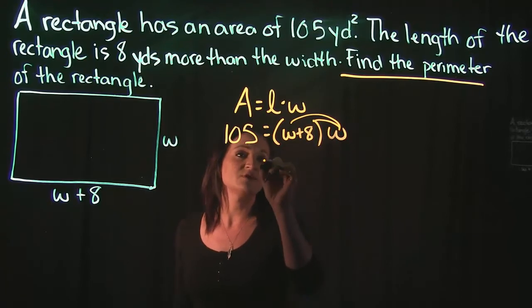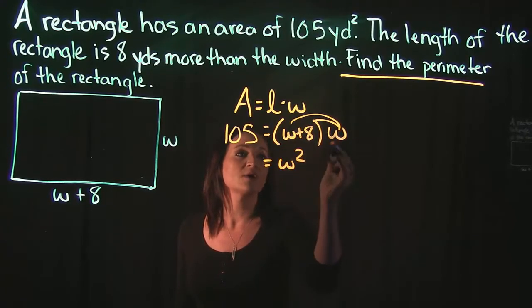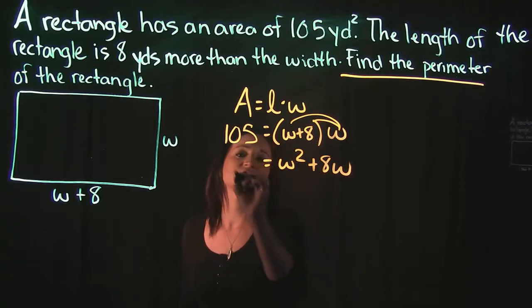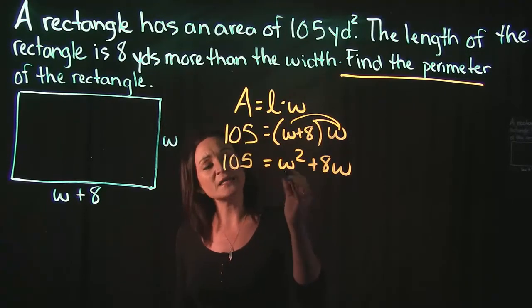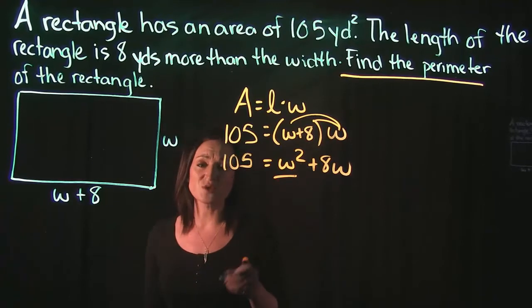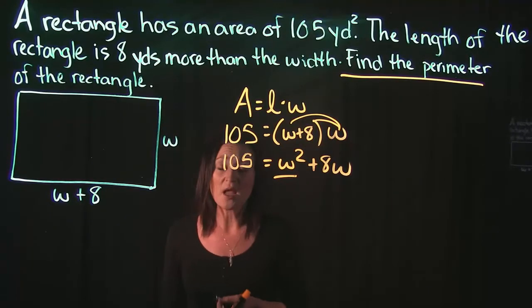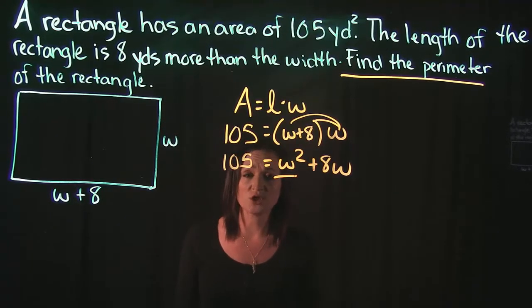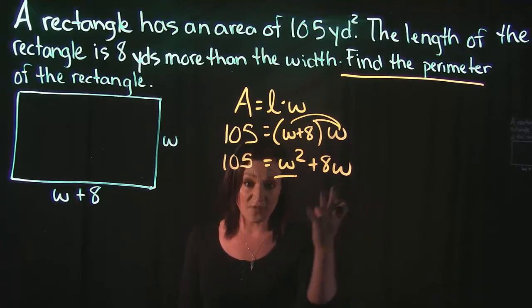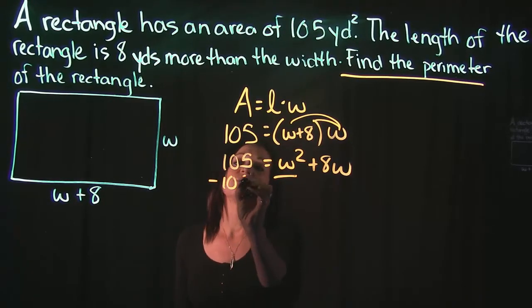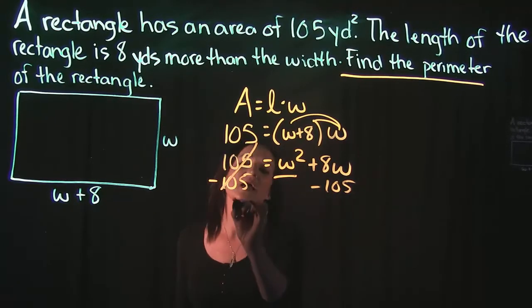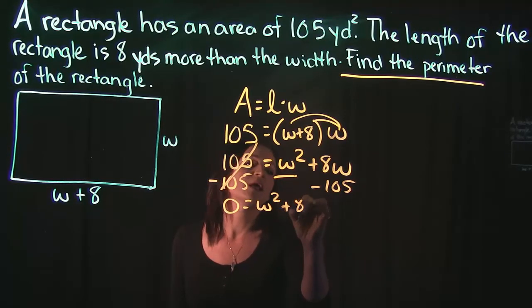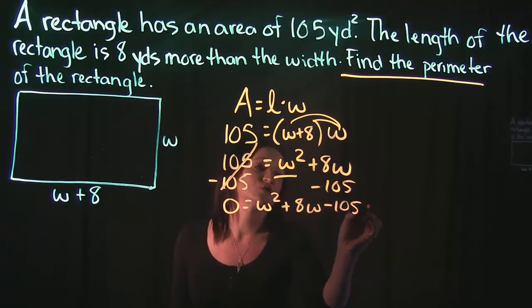W times W is W squared. W times 8 gives us 8W. The 105 drops down. Because I see this W squared, that means we're working with a quadratic equation. When working with a quadratic equation you want to move everything to one side and set it equal to 0. So I'm going to subtract 105 to get 0 equals W squared plus 8W minus 105.